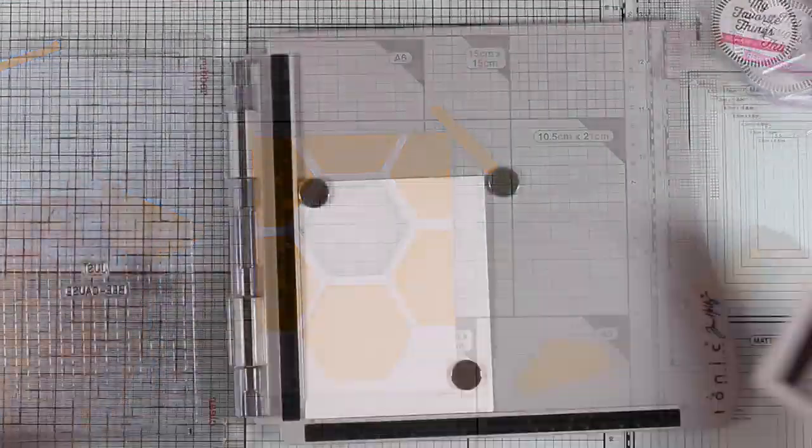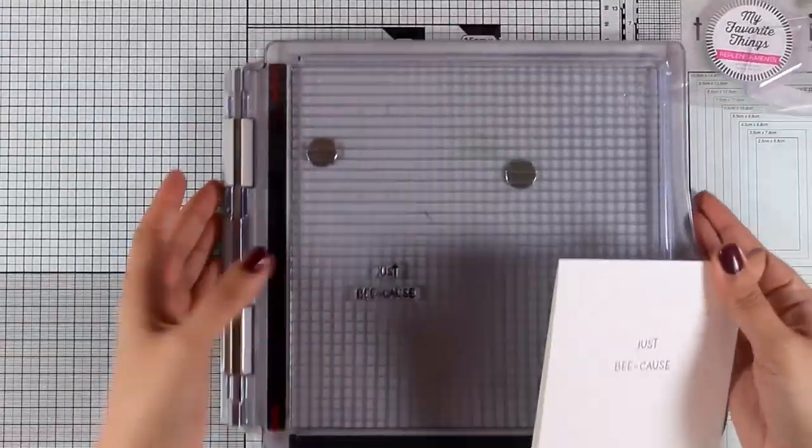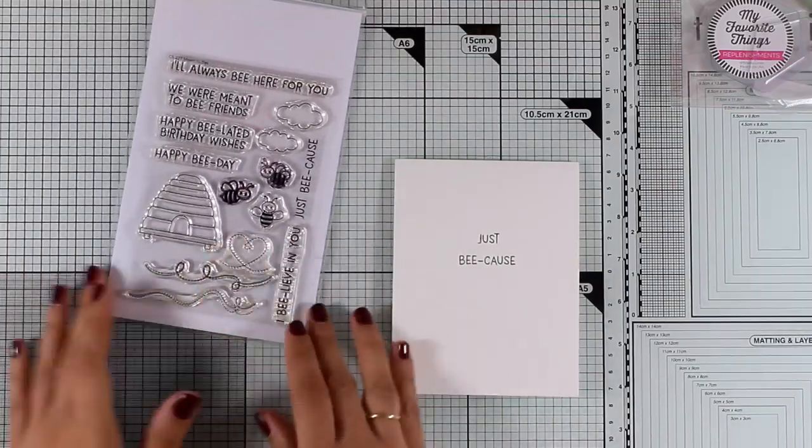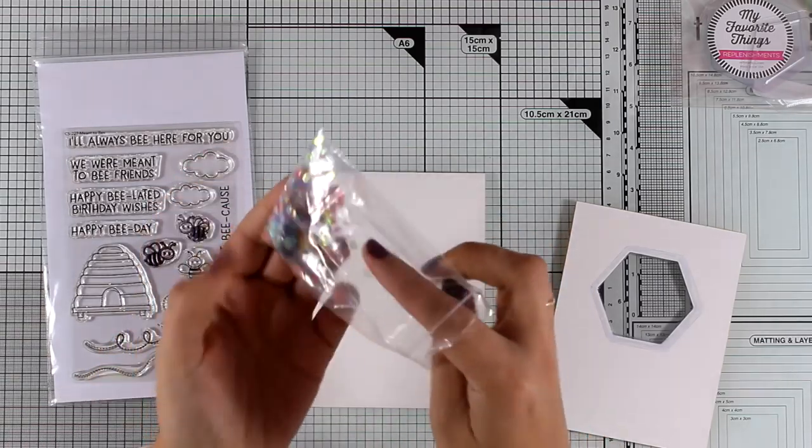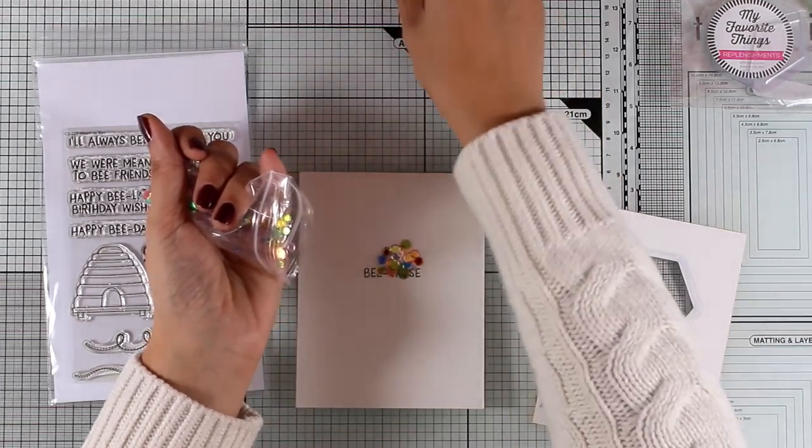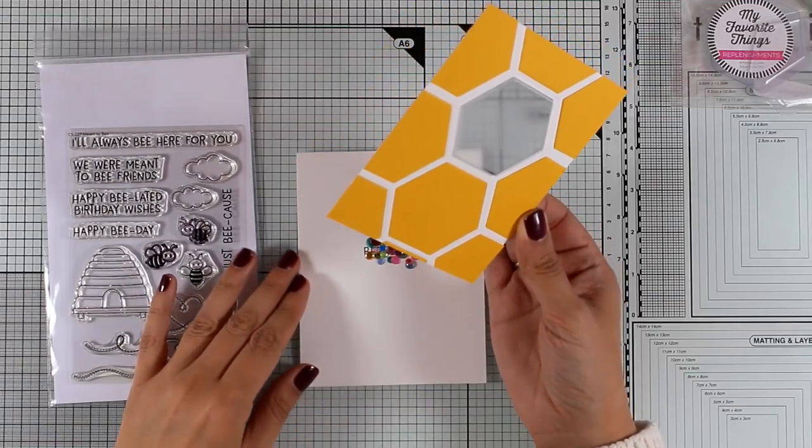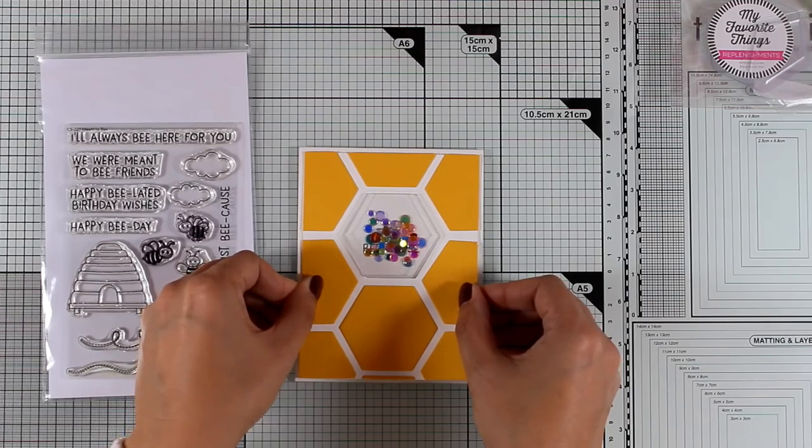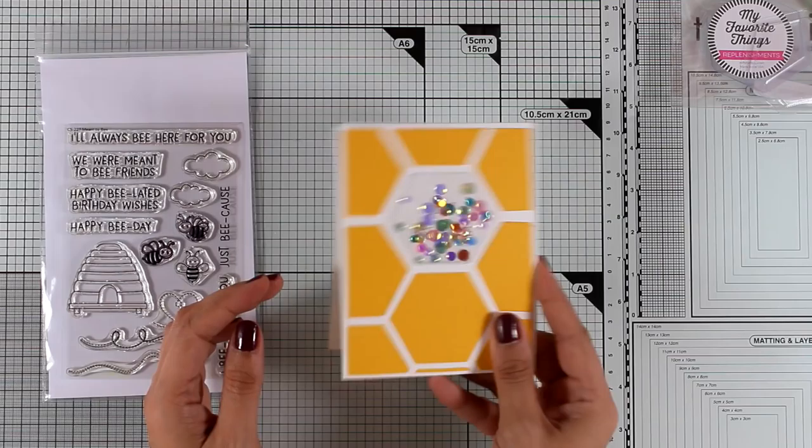For this card I'm going to use the 'meant to be' stamp set and I stamped on my card base the sentiment from that stamp set that says 'just because'. I had to cut my sentiment in half. If you don't want to do that you can always just mask off part of it and stamp in different lines. On top of my sentiment I'm going to add some sequins that I had in my stash and then I'm going to place on top my panel and the idea is to shake all those little bits and pieces in order to read the sentiment.